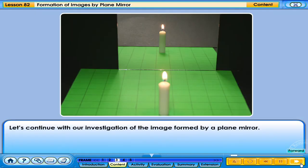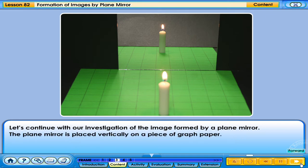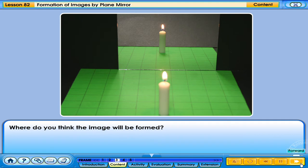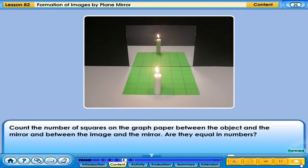Let's continue with our investigation of the image formed by a plain mirror. The plain mirror is placed vertically on a piece of graph paper. A lighted candle is placed in front of the glass sheet and the distance of the image formed behind the mirror is measured. Where do you think the image will be formed? Count the number of squares on the graph paper between the object and the mirror, and between the image and the mirror. Are they equal in numbers?